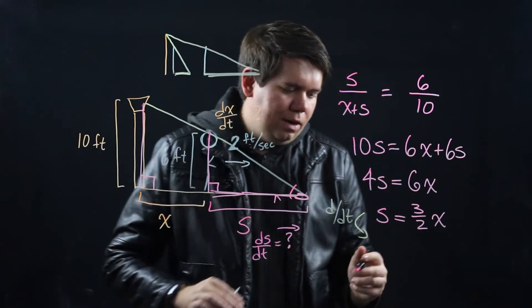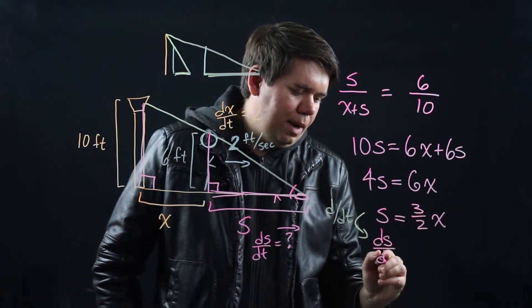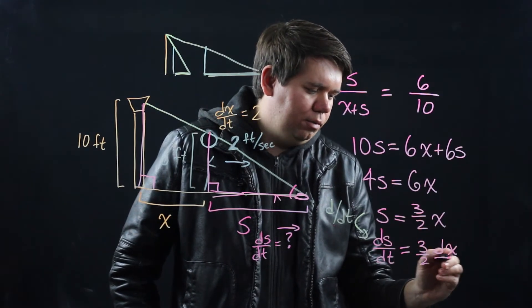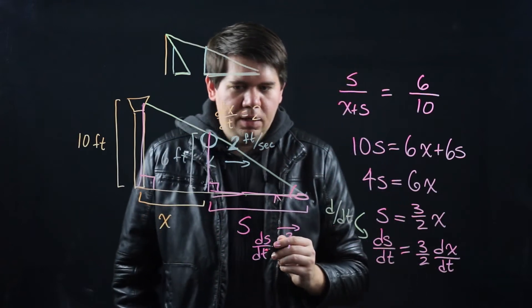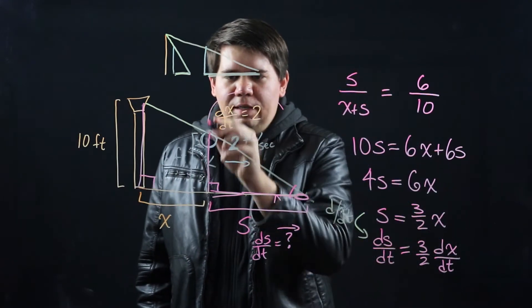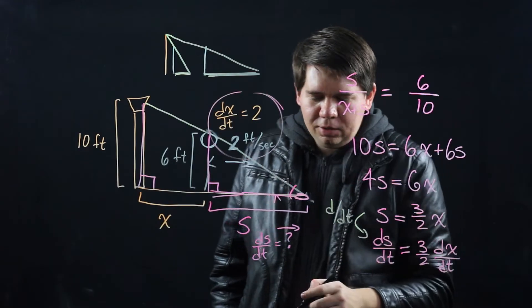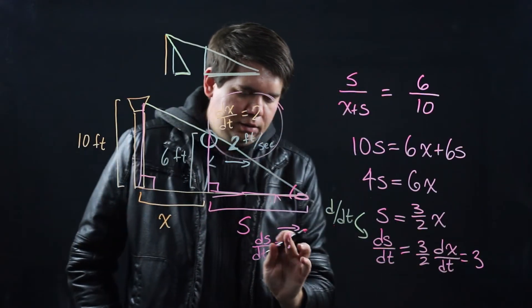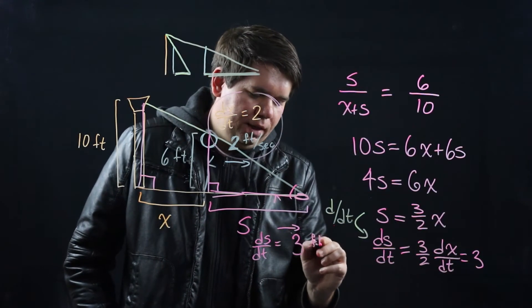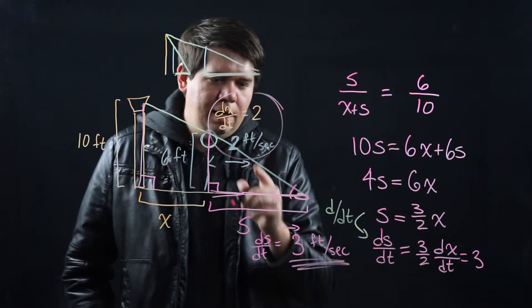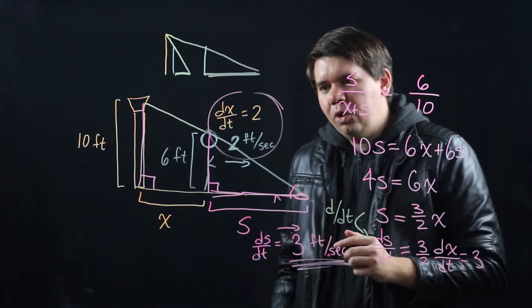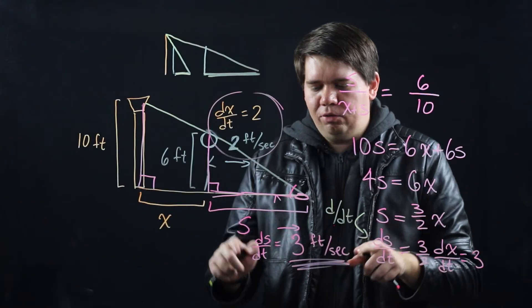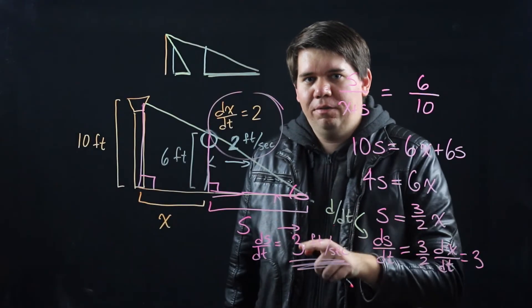And that will give us that the derivative of s with respect to time is equal to 3 halves the derivative of x with respect to time. But we've already been told that dx/dt is 2, and so then we conclude ds/dt must just be plug 2 in and you get 3. This must just be 3 feet per second, the same units as before. So although the person is only walking at 2 feet per second, the shadow is growing at a rate of 3 feet per second.